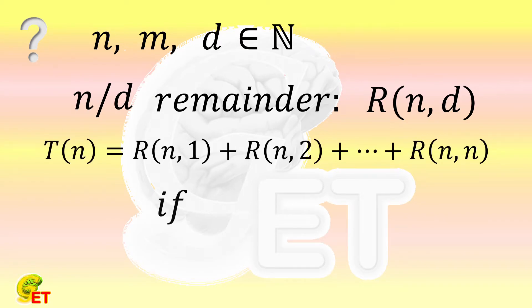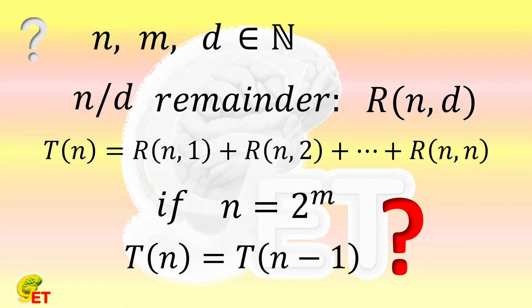If n is equal to 2 to the m-th power, T(n) and T(n-1) are equal to each other. Can you prove this conclusion? Why not give it a try, and we will come back soon.